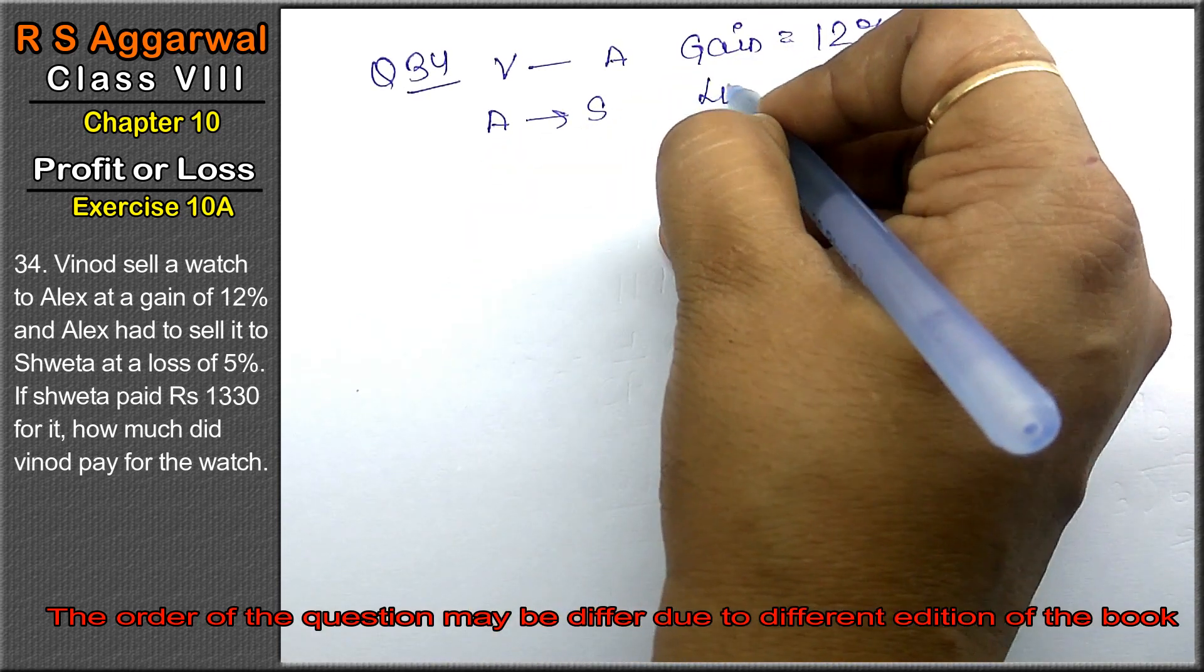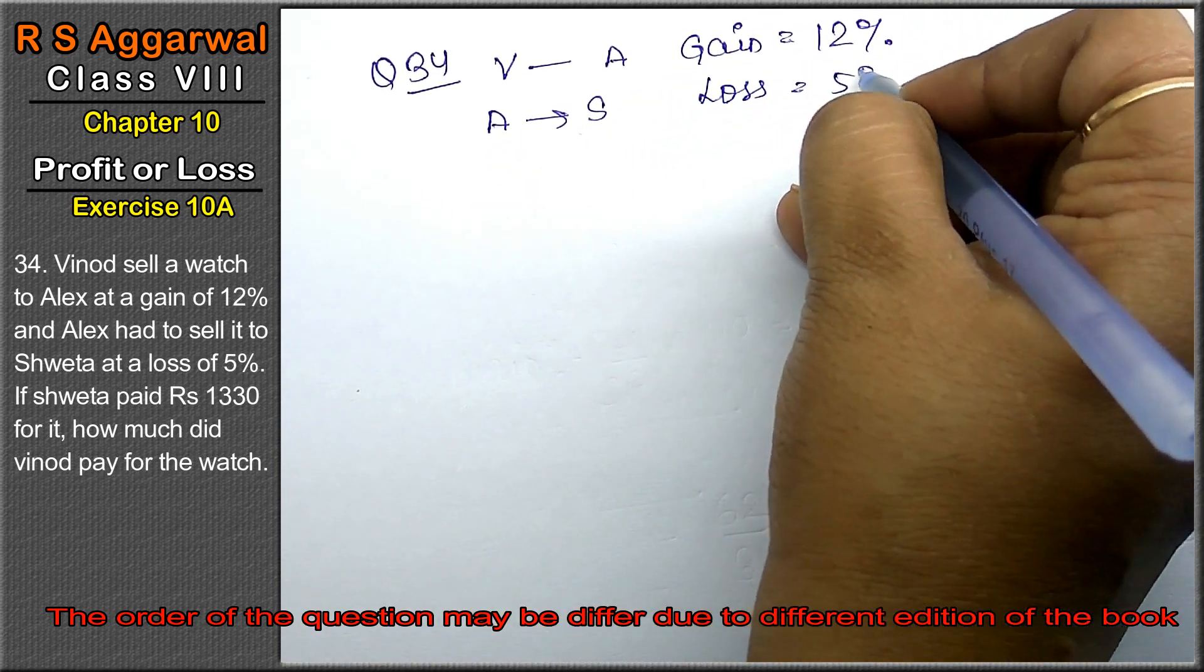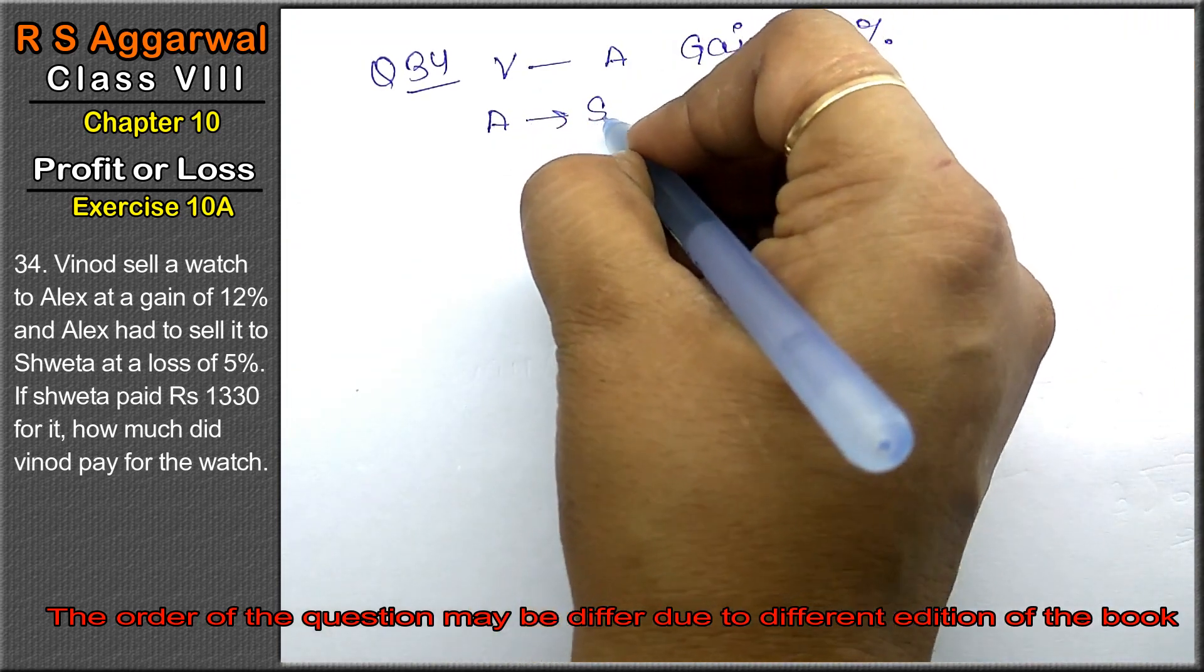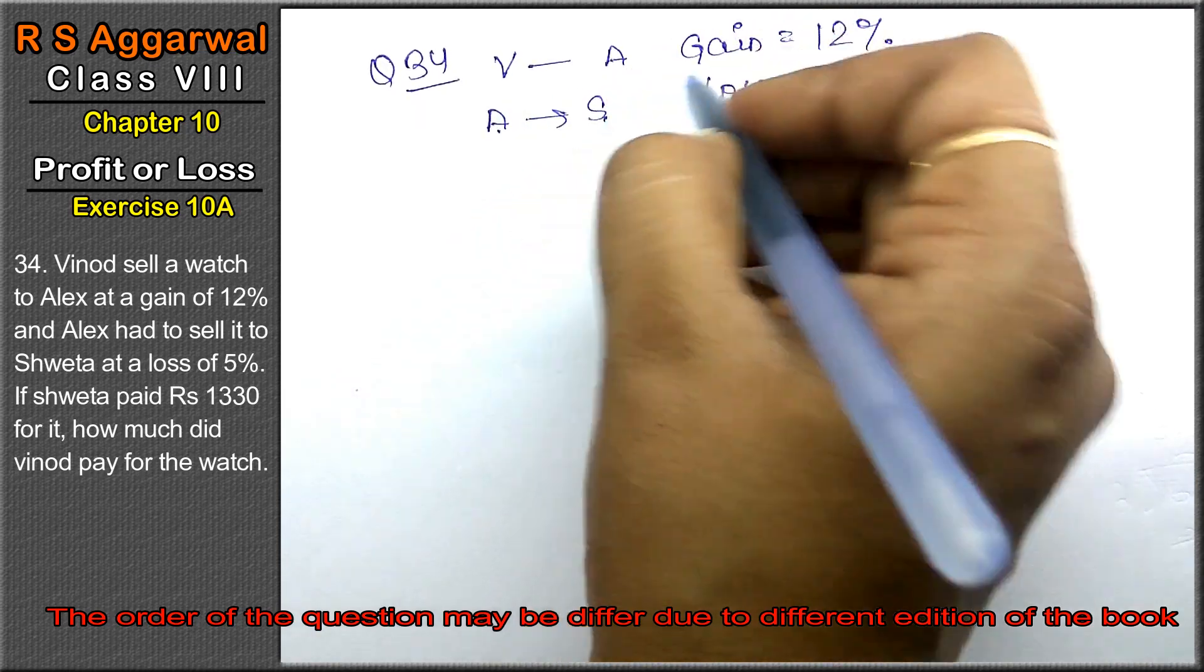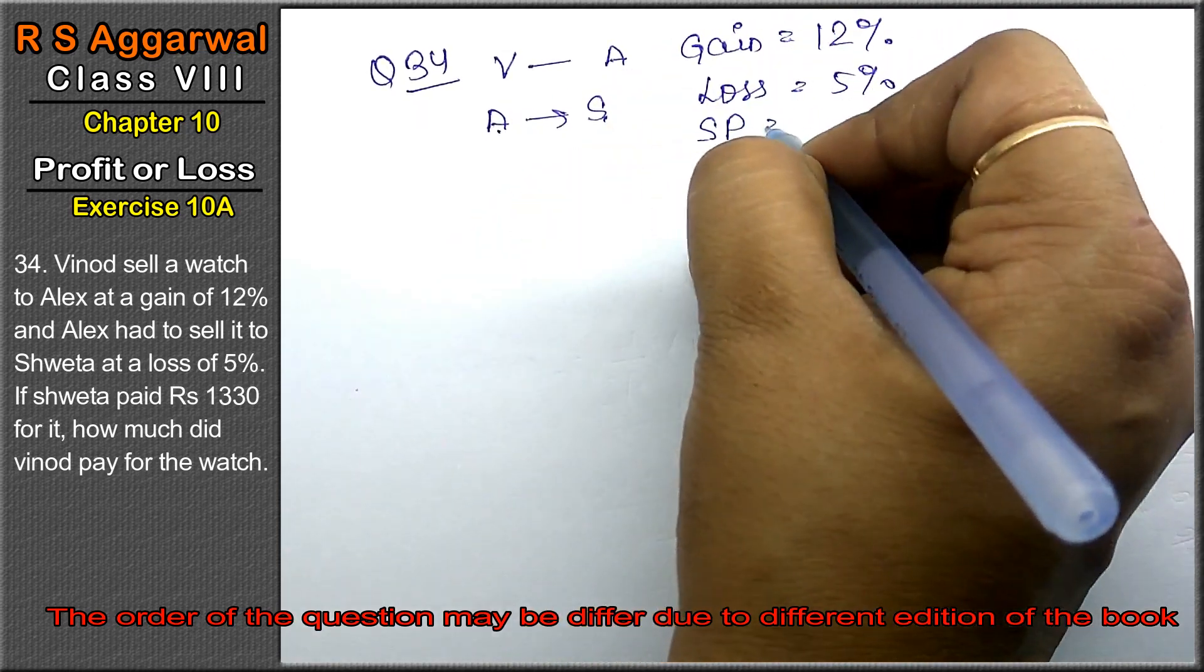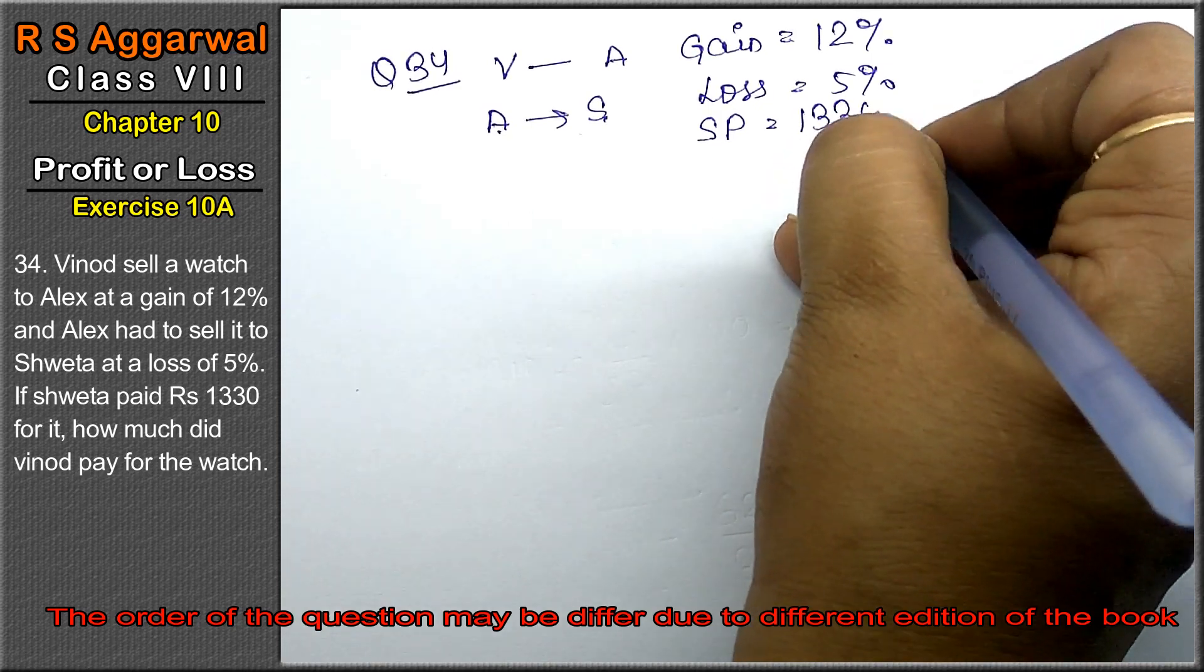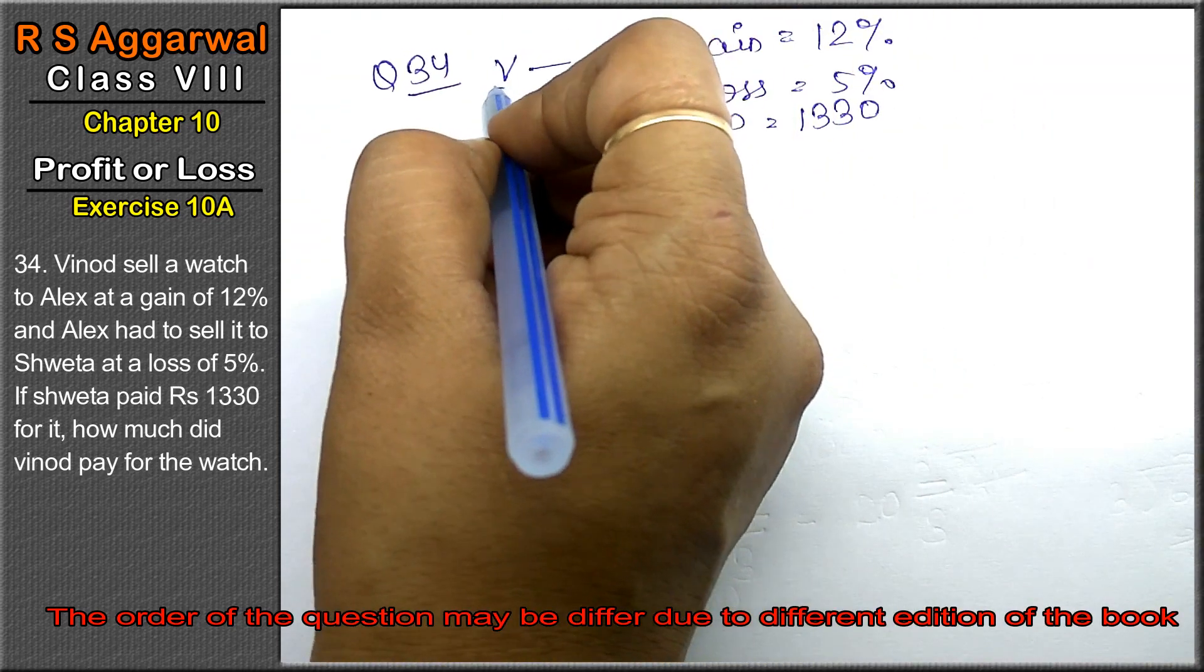at a loss of 5%. If Shweta paid, Shweta paid for it, that is SP, SP is 1330.